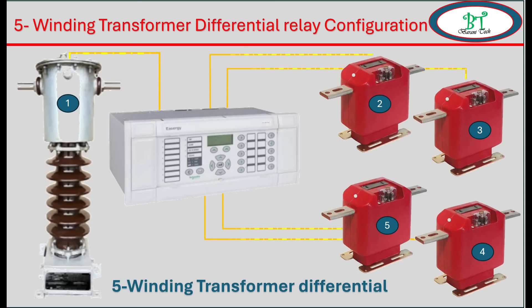Now I am going to focus on the numerical relay. The main protection is known as transformer differential protection. Since this is a five-winding transformer, we need five CTs with a three-phase set for this protection — one from the HV side and four from the LV side. Before going into relay settings, we must understand this concept. Let us consider the transformer rating is 8000 KVA.